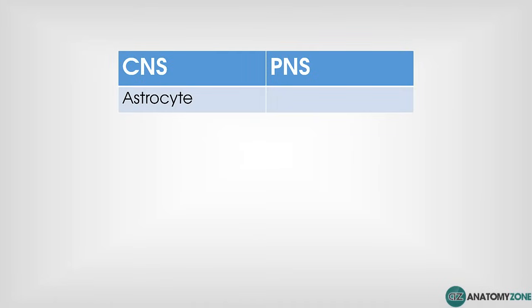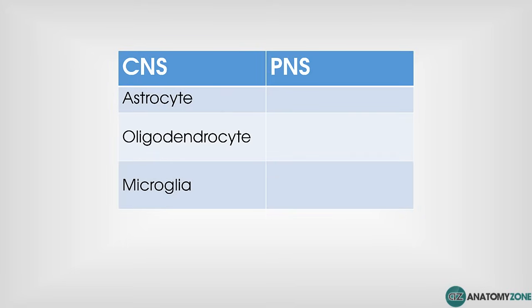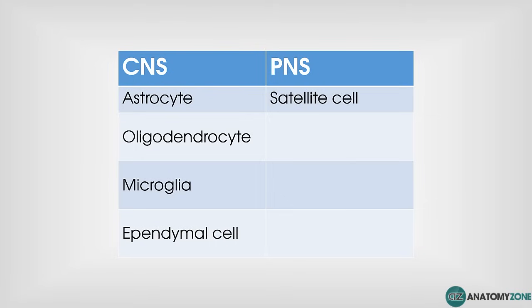There are six types of glial cells: four in the central nervous system and two in the peripheral nervous system. In the central nervous system you've got the astrocyte, the oligodendrocyte, the microglial cell, and the ependymal cell. In the peripheral nervous system you've got two types: the satellite cell and the Schwann cell.